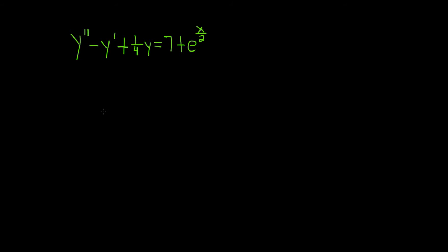In this problem, we're going to solve this differential equation. This is a linear differential equation with constant coefficients and is non-homogeneous because the right-hand side is not 0. The solution is of the form y equals y sub c plus y sub p. We'll start by finding y sub c, which is the associated homogeneous solution, also called the complementary function.